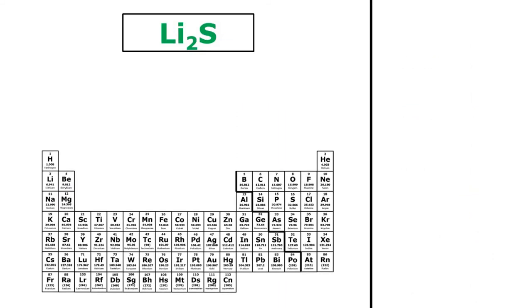And finally I have Li2S. So Li is lithium, that's my metal, so I just write lithium. And then S is sulfur, but I change the ending to '-ide.' So the name of this ionic compound is lithium sulfide.